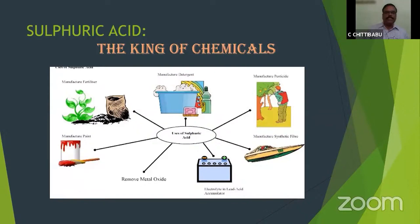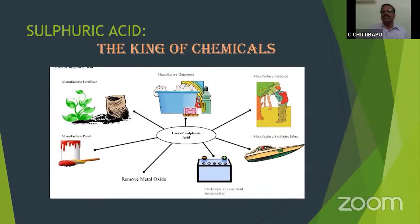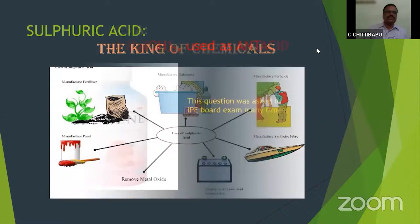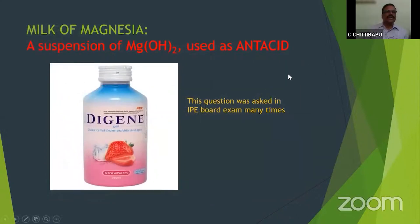Sulfuric acid, the king of chemicals, has the formula H₂SO₄. It is one of the most dangerous acids — if someone sprays it, the person will get blisters and be severely burnt. That is the dangerous role of sulfuric acid, and it is something we observe in daily life.